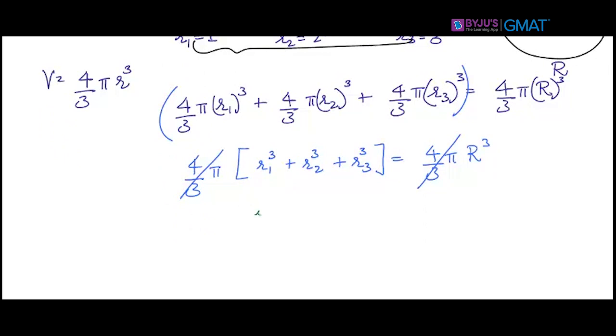The value of r1 is 1, so 1³ plus r2 is 2, so 2³ plus r3 is 3, so 3³ should equal R³. If I simplify this, we end up getting R³ as 36.